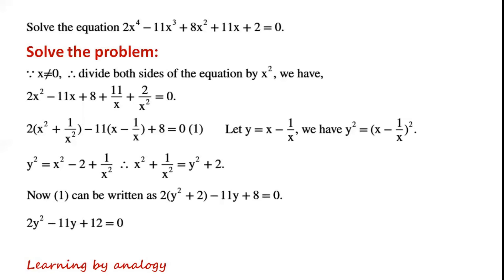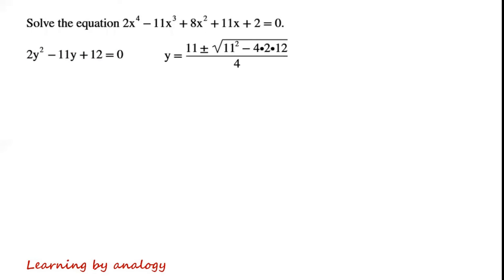This simplifies to 2y² minus 11y plus 12 equals 0. Solving this quadratic equation using the quadratic formula: y equals (11 plus or minus the square root of 11² minus 4 times 2 times 12) over 4, which simplifies to (11 plus or minus 5) over 4. So either y equals 4 or y equals 3 over 2.